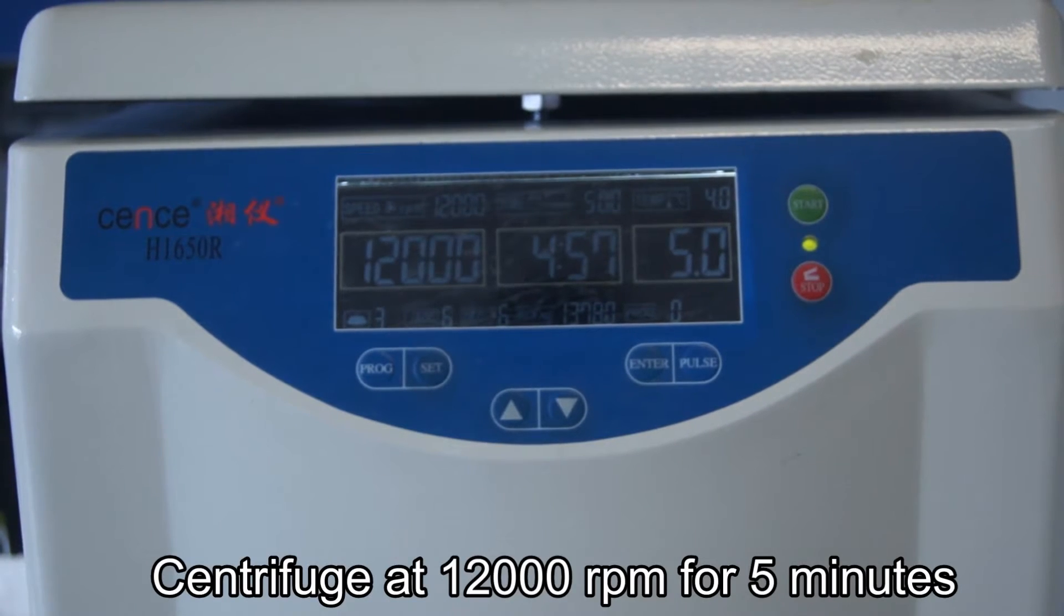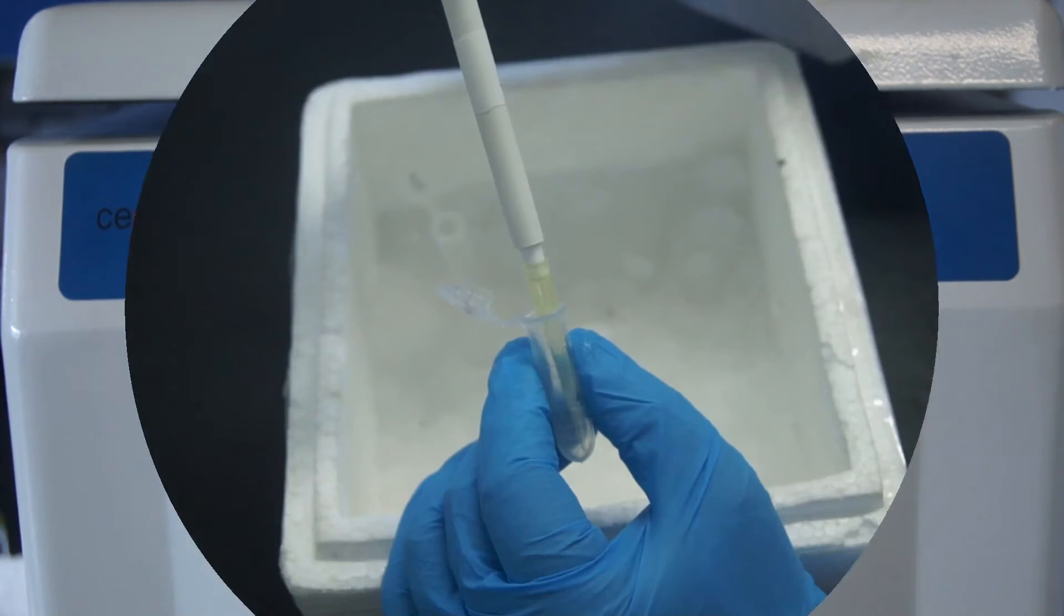Centrifuge at 12,000 RPM for 5 minutes at 4 degrees centigrade. Then take the supernatant.